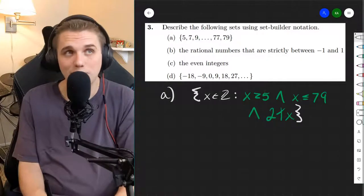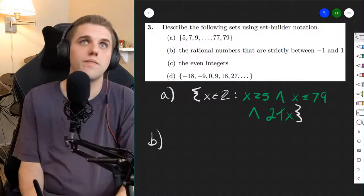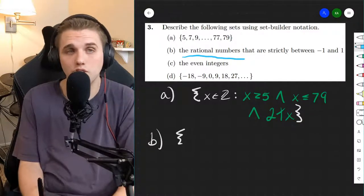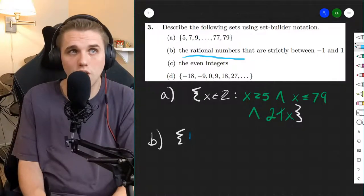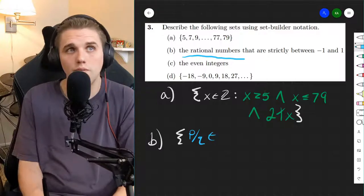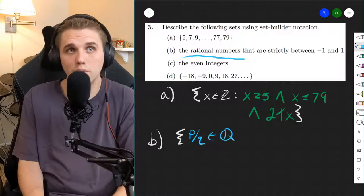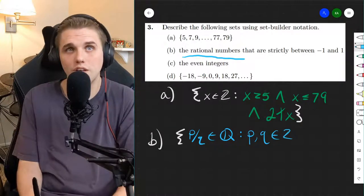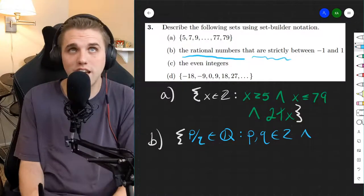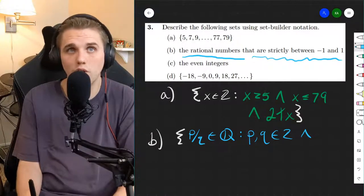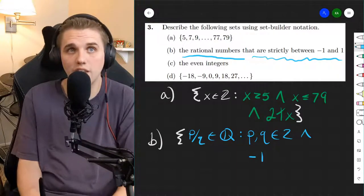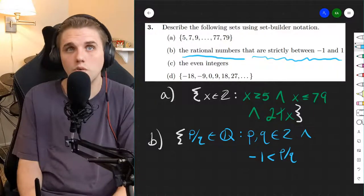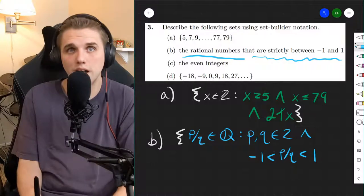All right, let's move on to part B. Right off the bat, I want to point out that we are working in the rational numbers. So rational numbers are some P over Q, which lies in the rational numbers such that P and Q are integers. And we need to also satisfy that these rational numbers are between negative 1 and 1. So we can say negative 1 is strictly less than P over Q, which is strictly less than positive 1.